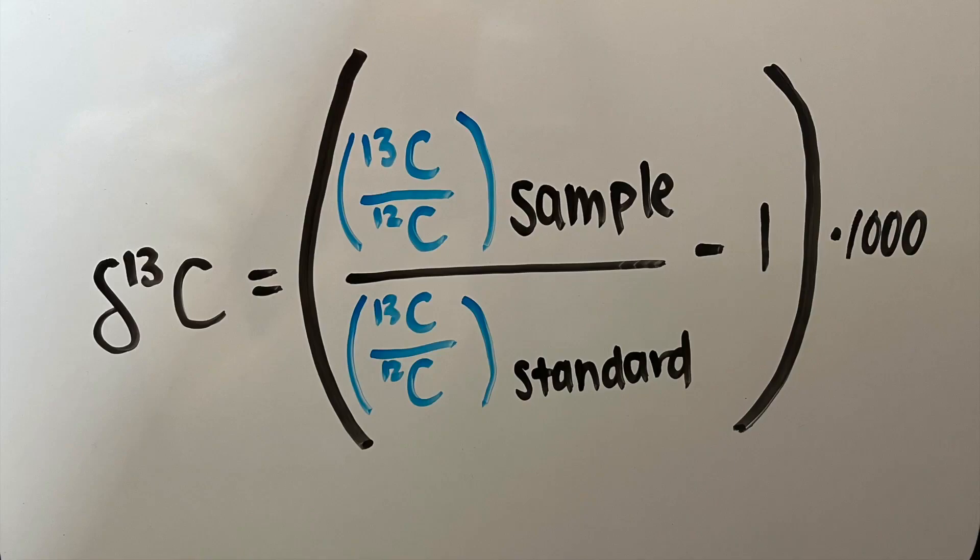Delta C13 values can either be positive or negative. A more negative value indicates more carbon-12, while a more positive value indicates more carbon-13.